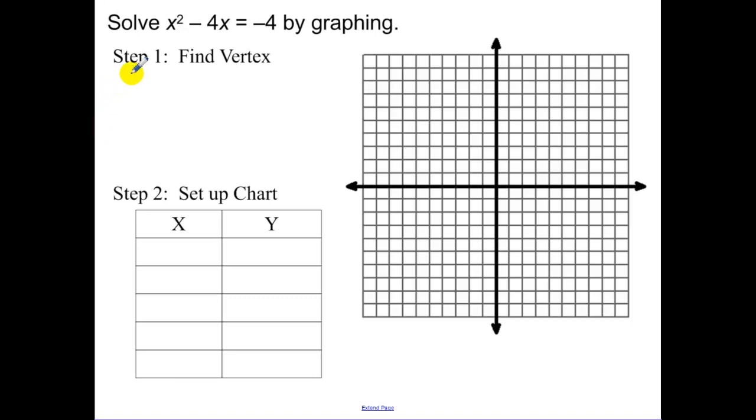Okay, solve this by graphing. First get it so that it's set equal to 0. Find your vertex. Negative b over 2a. That vertex value goes in the middle value. I now need to find f of 2. So that's equal to 4 minus 8 plus 4. That equals 0.